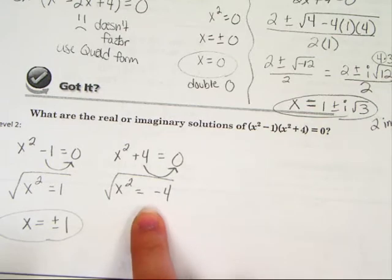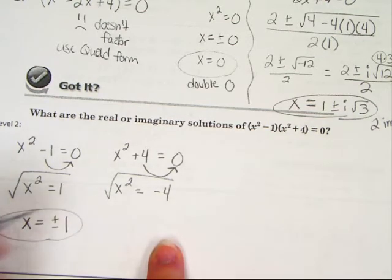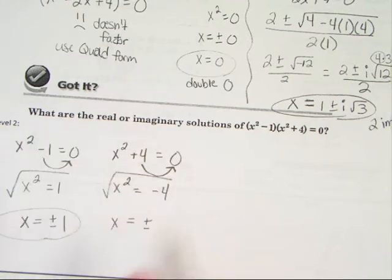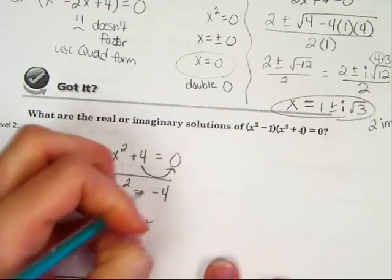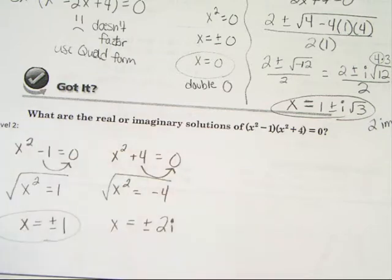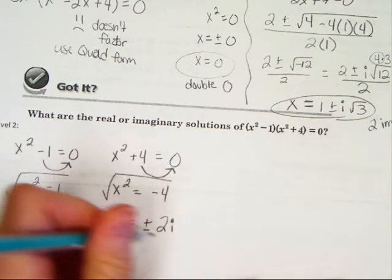And then we go to the second one. When we take the square root of x², again, we get x. Now, this time, when we take the square root of a negative 4, we still get plus or minus. But remember, when you take the square root of a negative, you not only get the answer, but it is an imaginary problem. So you get plus or minus 2i.